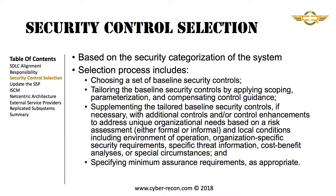Security control selection is set based on the security categorization of the system. This categorization allows the identification of a baseline set of controls used as the starting point for defining controls for the system. This baseline set can then be tailored to meet the needs of the actual system by adding controls, removing controls, or modifying the parameters of a control to fit the risk-specific needs of the information system. This is all part of the tailoring process.